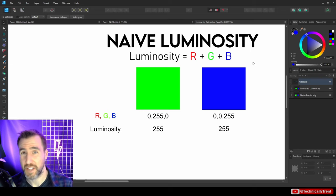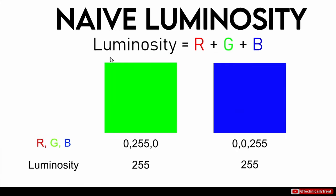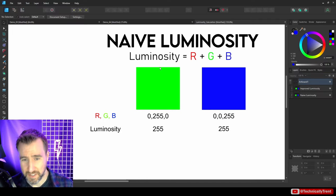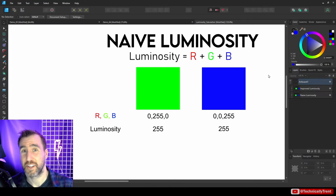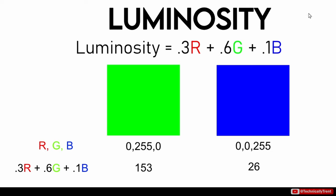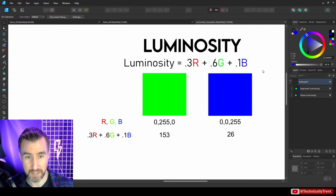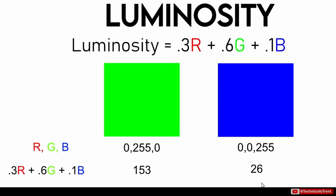One way to calculate luminosity is simply to add red, green, and blue together. For example, this green (0, 255, 0) would have luminosity 255, and blue would also be 255. But this example shows the problem: even though the numbers are the same, the blue square just feels darker than the green square. The human eye detects blue as darker than green. So we can use a weighted formula instead: 0.3 × red + 0.6 × green + 0.1 × blue. With this weighting, green's luminosity becomes 153 and blue's becomes 26.